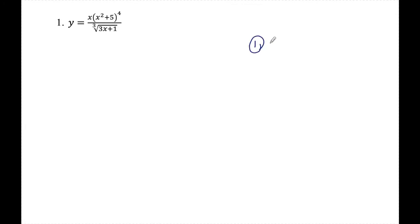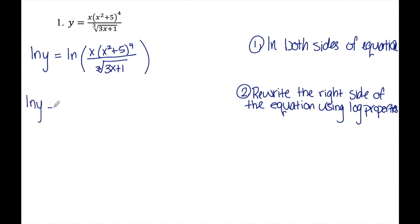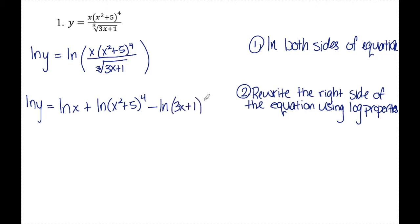The first step is to take the natural log of both sides of the equation. Then I'll use log properties to expand the right-hand side. The left side stays the same. On the right side, I make the division into subtraction and the multiplication into addition: ln(x) plus ln of (x squared plus 5) to the fourth, minus ln of (3x plus 1) to the one-third.